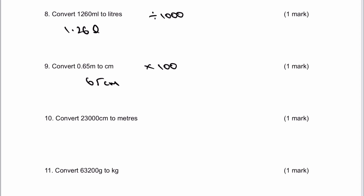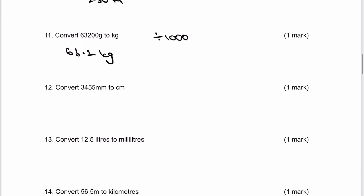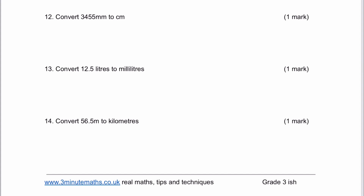Let's look at number 10 and number 11. So 23,000 centimetres to metres — I'm going to be dividing by 100, giving 230 metres as the answer to number 10. Number 11, we're going to be dividing by 1,000. Hopefully you're getting used to this now — it really is just a case of moving the decimal point backwards and forwards. And once you've done these a few times, hopefully it shouldn't be so tricky. Number 12, we're going to divide by 10 because there's 10 millimetres in a centimetre, giving 345.5 centimetres.